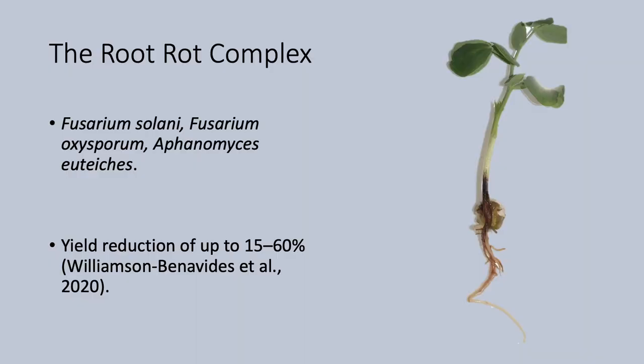I investigated two of these pathogens, called Fusarium solanii and Fusarium oxysporum, which cause rotting and wilting respectively. These pathogens are part of the root rot complex as they are often found together. Aside from those two, Aphanomyces is an oomycete which is also part of this complex.